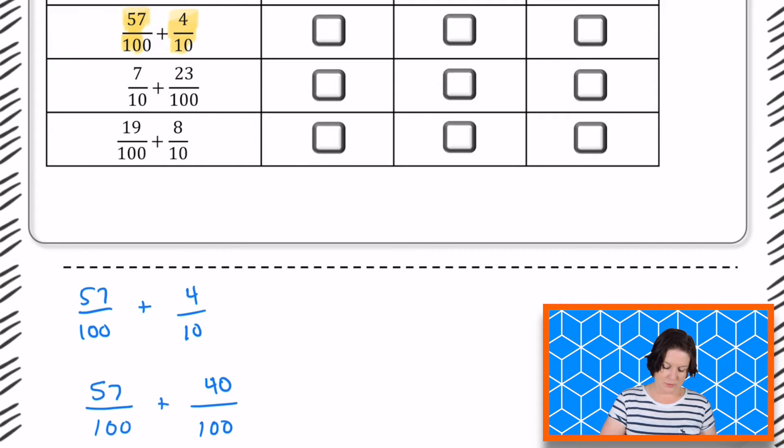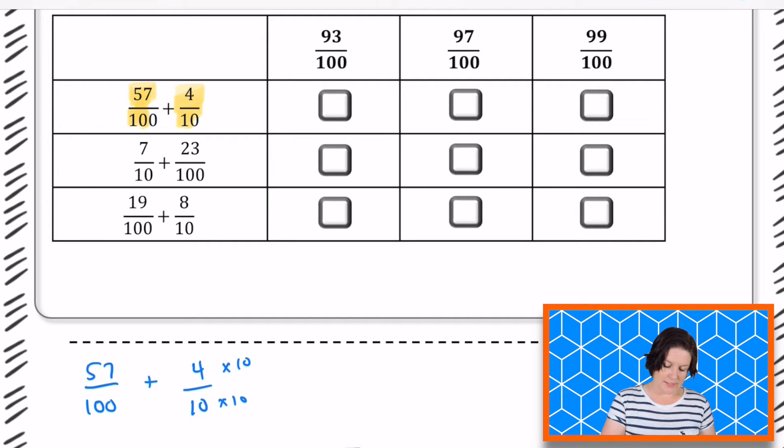Now, how did we do that? Well, we just multiplied both the numerator or the denominator and the numerator by 10 in order to get 40 hundredths. So when we do that now, we know that 57 hundredths plus 40 hundredths would be 97 hundredths. So we can go ahead and pick that one. I see 97 hundredths right here. Match it up with the expression I was working on. That is the one.